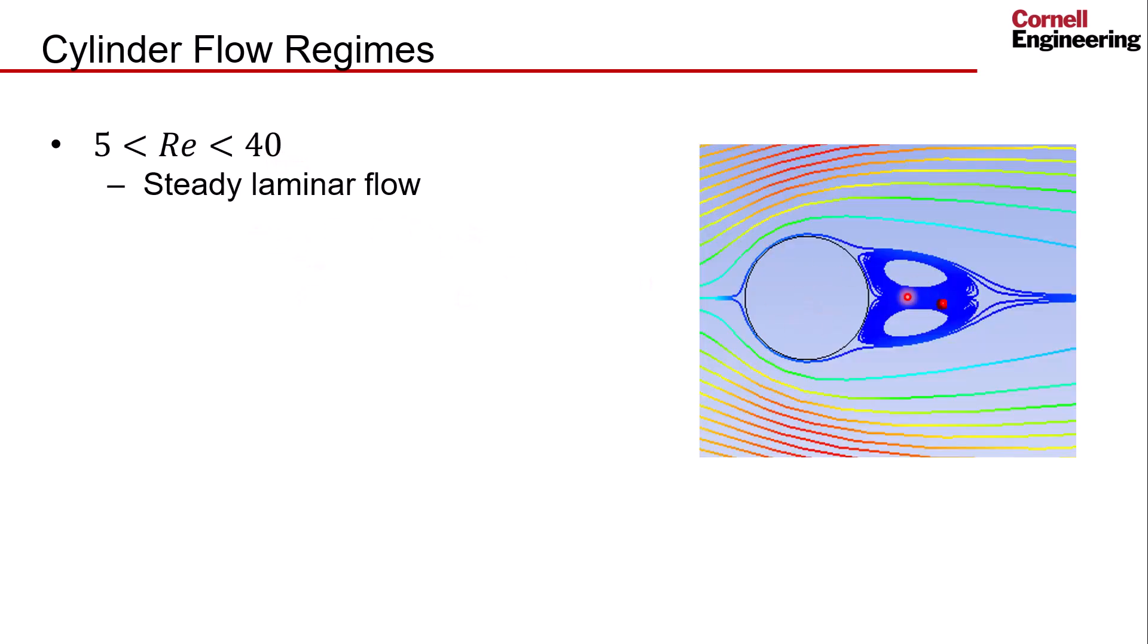The cylinder flow regime depends on the Reynolds number. Between a Reynolds number of 5 and about 40 we get steady laminar flow and the streamlines look something like that, so you get the symmetric separation region behind the cylinder. The Reynolds number is based on the diameter of the cylinder as we will see in a moment.